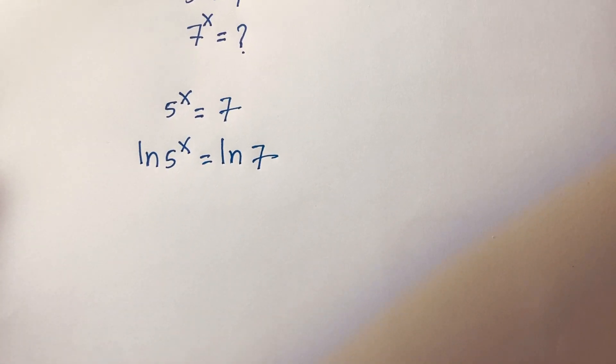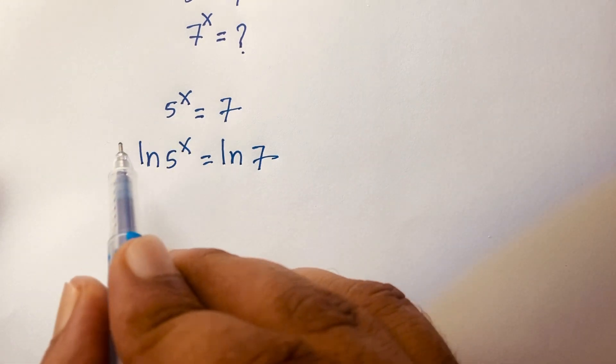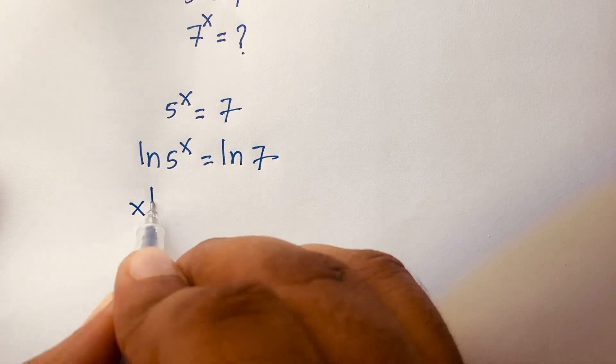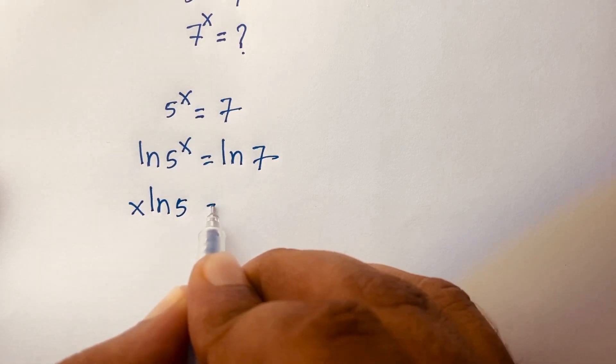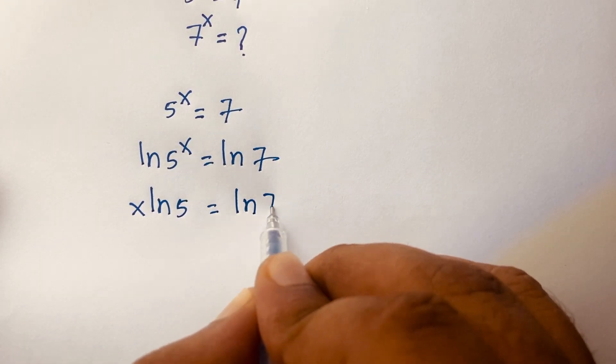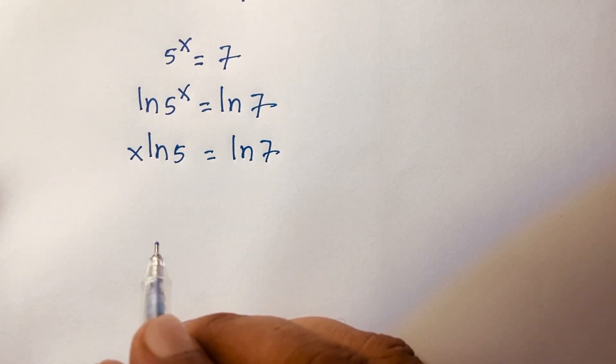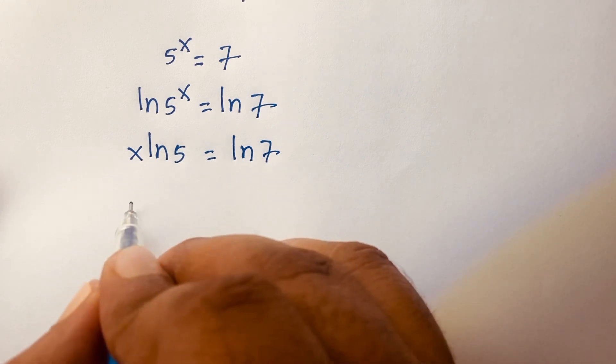Then I can say according to logarithm rules, this exponent moves in front, so it will be x ln 5 is equal to ln 7. Then I divide both sides by ln 5.